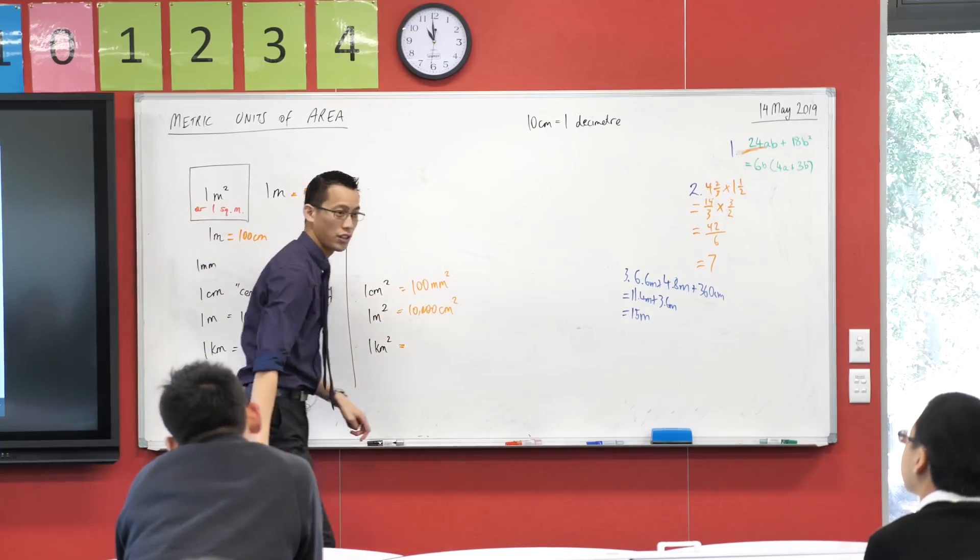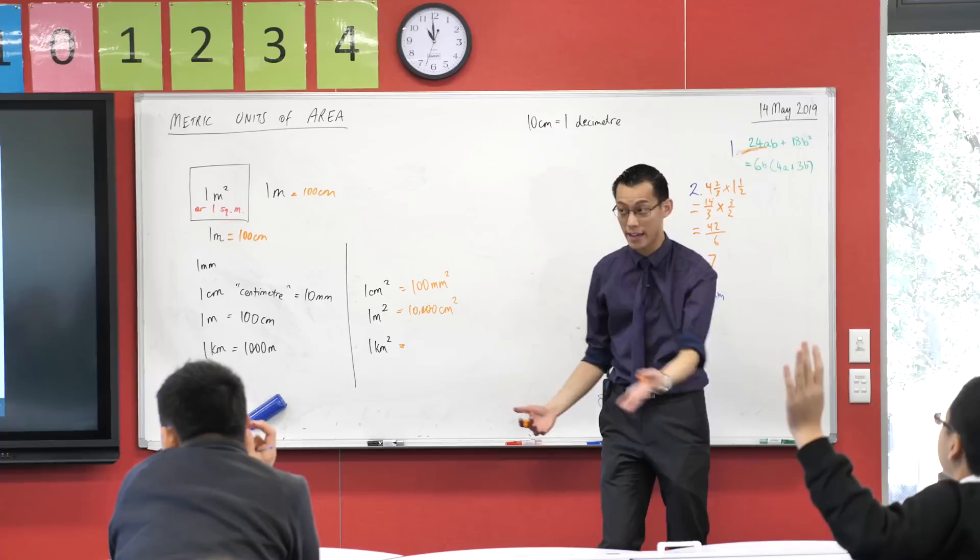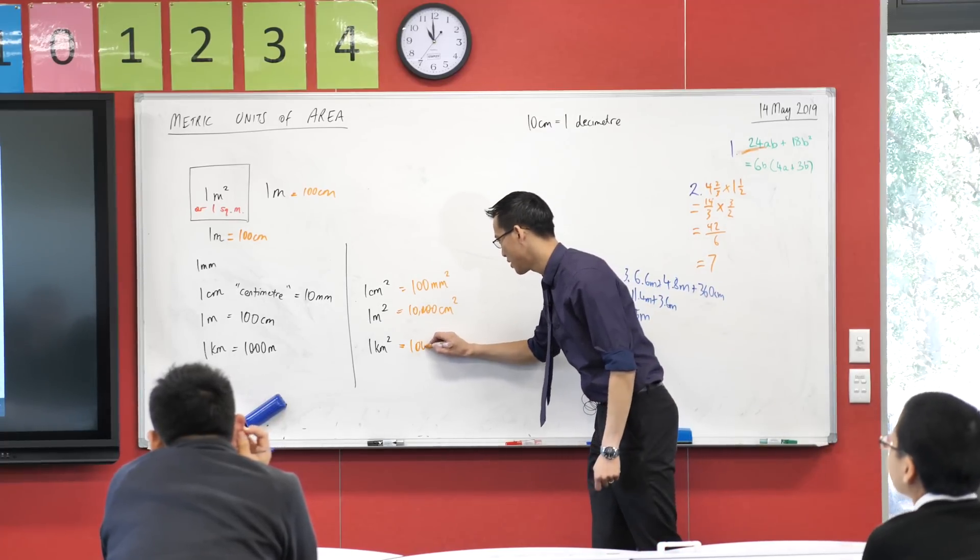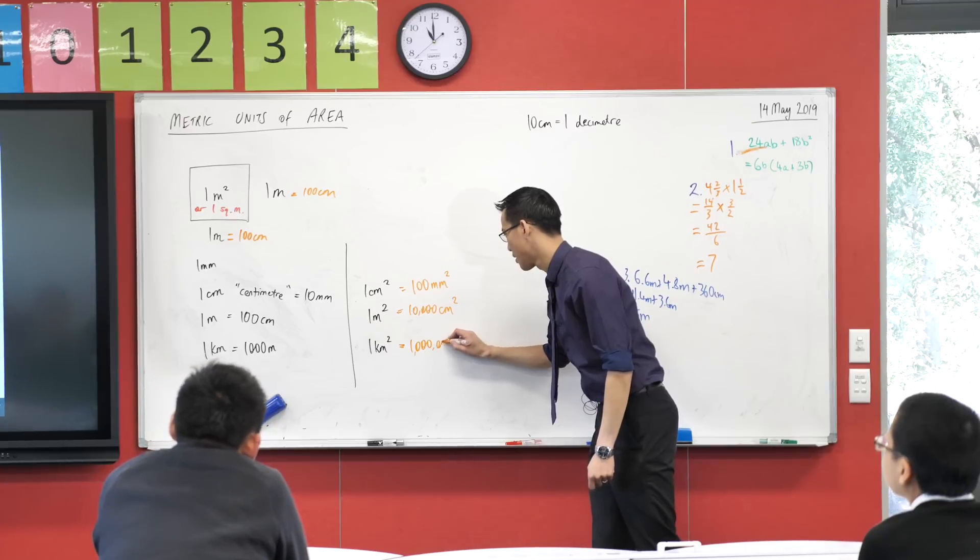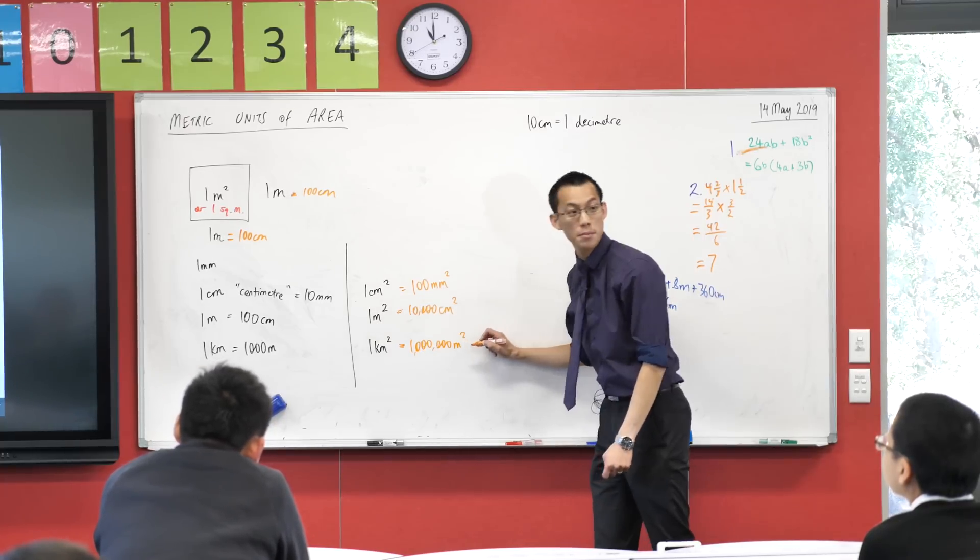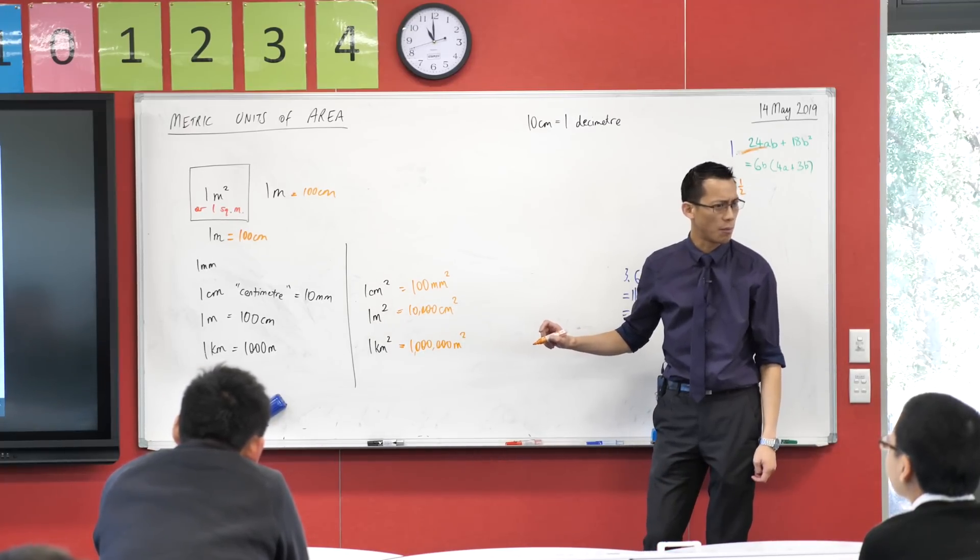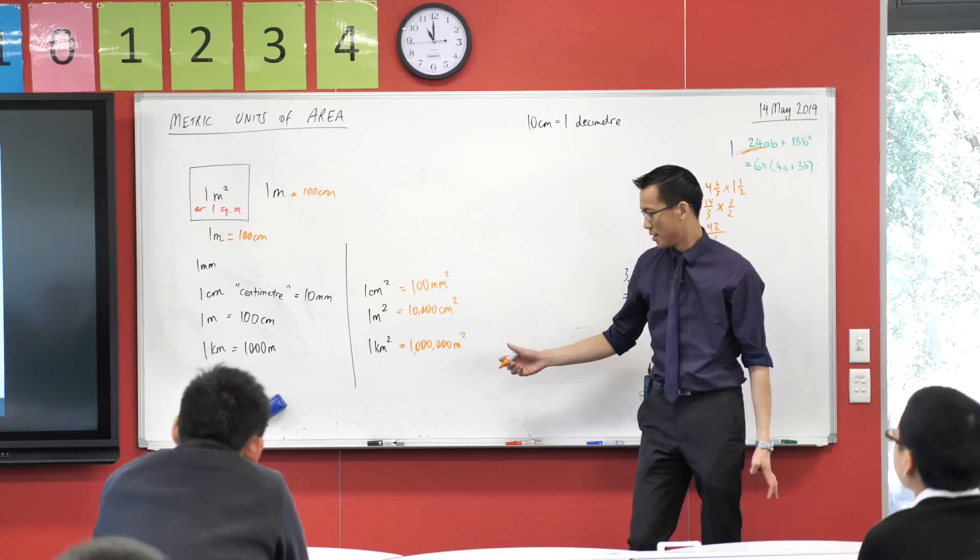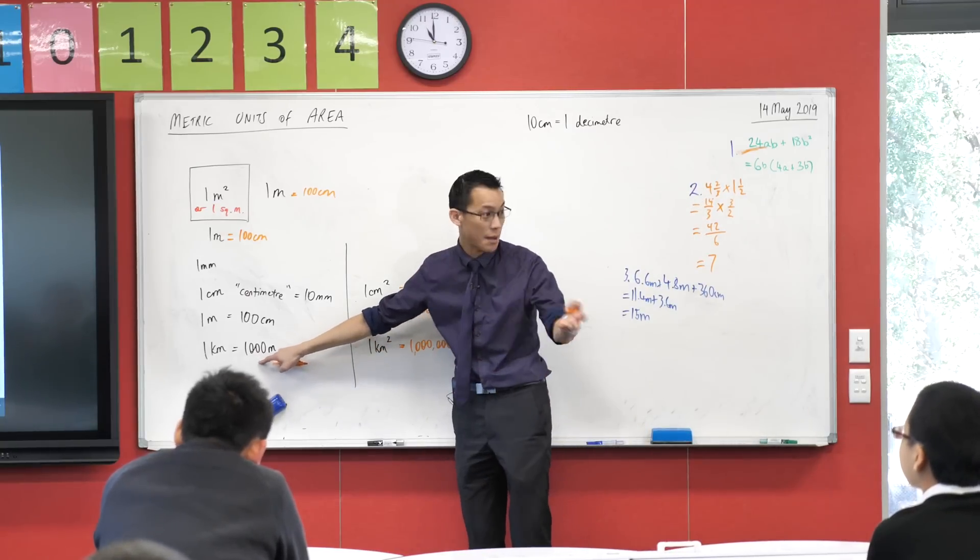Let's do the last one here on the list. A square kilometre. This is really big, Harry. One million. One million? Is that what you're saying? And can you see where we got the million from? Where did the million come from? It's huge. One thousand. It's a thousand times a thousand.